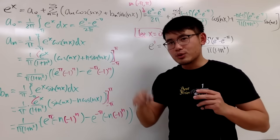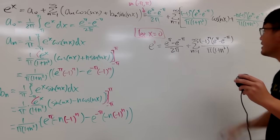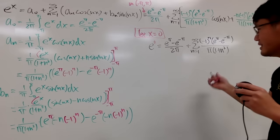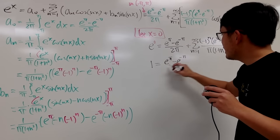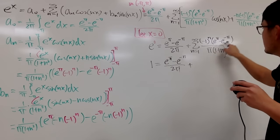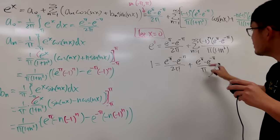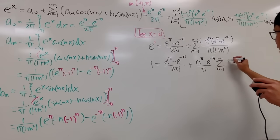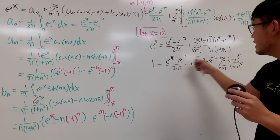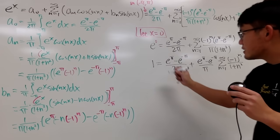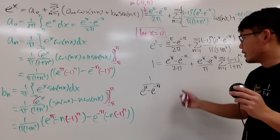We know the series ∑(n=1 to ∞) 1/n² = π²/6. Here we have 1 + n² in the denominator, so we get an alternating version of it — still really cool. Setting up the equation: 1 = (e^π − e^(−π)) / 2π + (e^π − e^(−π)) / π · ∑(n=1 to ∞) (−1)^n / (1 + n²). Dividing both sides by (e^π − e^(−π)) / π to isolate the sum gives 1/(e^π − e^(−π)) − 1/(2π) = (1/π) · ∑(n=1 to ∞) (−1)^n / (1 + n²).